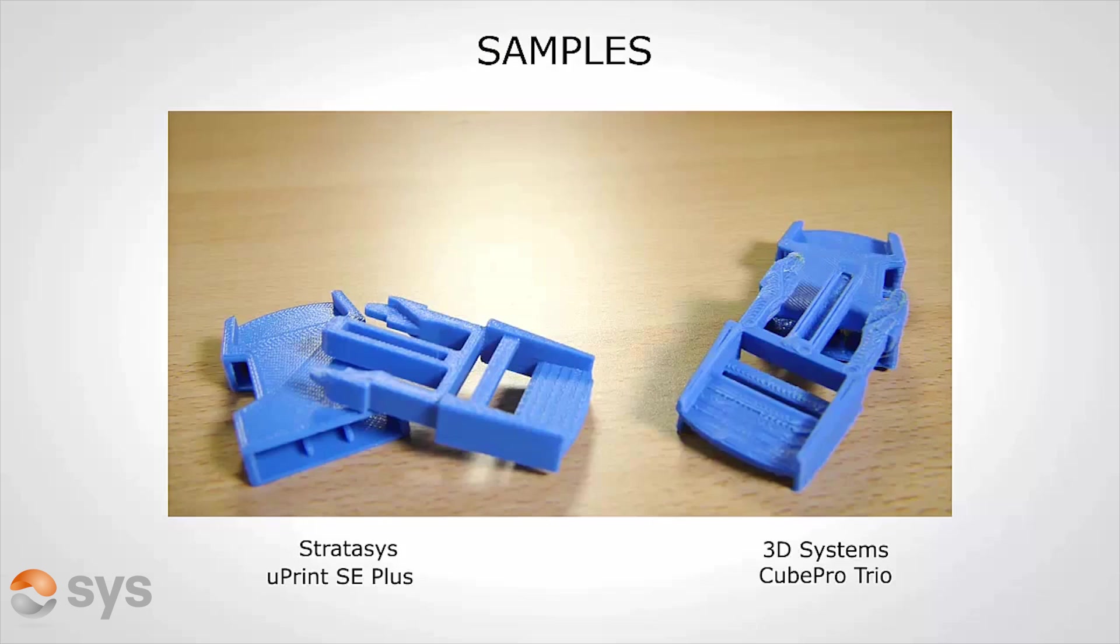This quality difference between the two machines is likely to be very apparent on any model where there's a need to use the PLA support material. It is also worth noting the considerable increase in print time when using the additional models, with the idle time for nozzle change being approximately 30 seconds per 30 seconds of actual print time for the sample that we were printing.